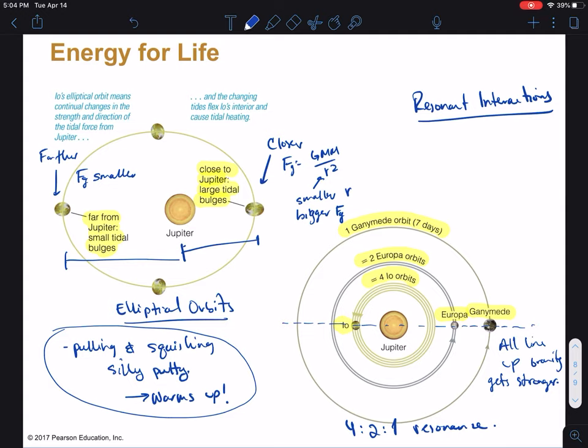Every so often these moons all line up in a row. When they all line up, the gravity that's bending and stretching of them gets stronger because they're all pulling in the same direction. We would call this is a four to two to one resonance. Again it ends up pulling and squishing and warming it up like silly putty. These resonances aren't just a coincidence - we think that the moons probably migrated around. When planets and moons migrate they tend to capture each other in resonances. We see this a lot in the rings of Saturn. The Cassini spacecraft did a wonderful job for about 15 years of studying many of the resonances in Saturn's rings.